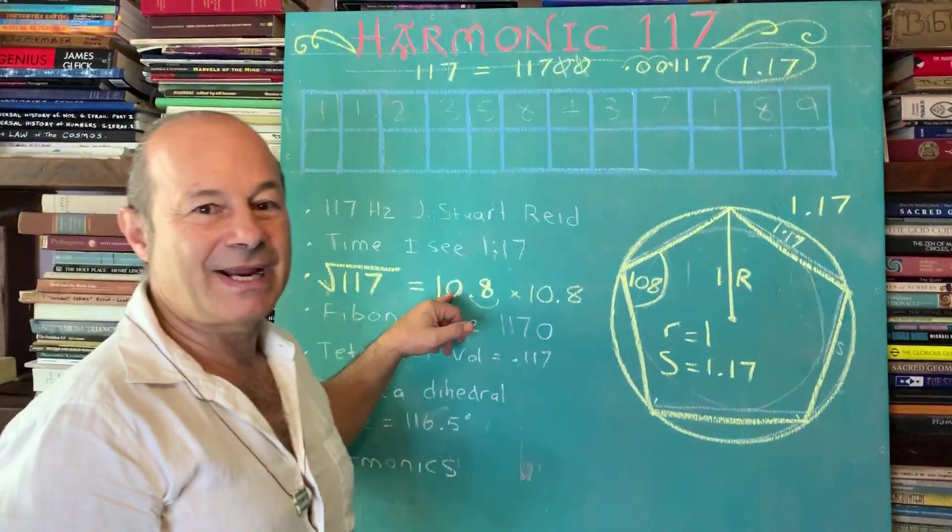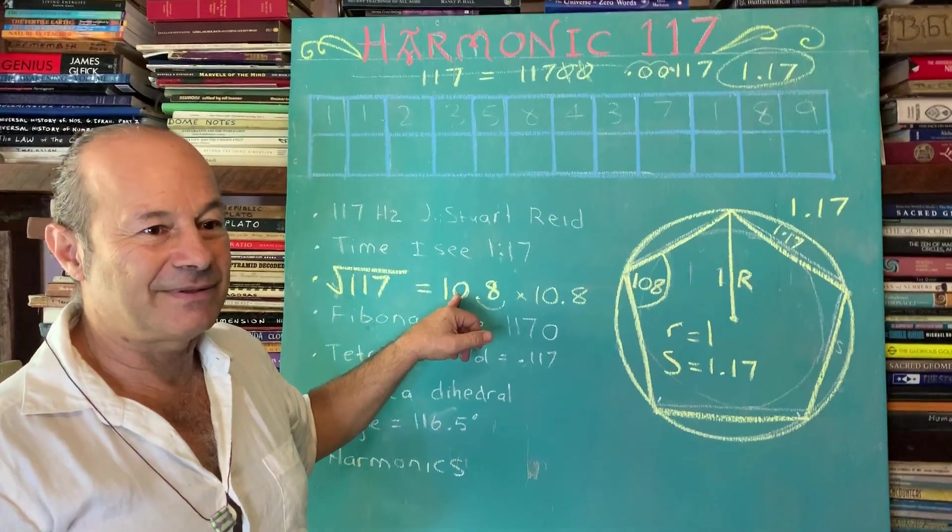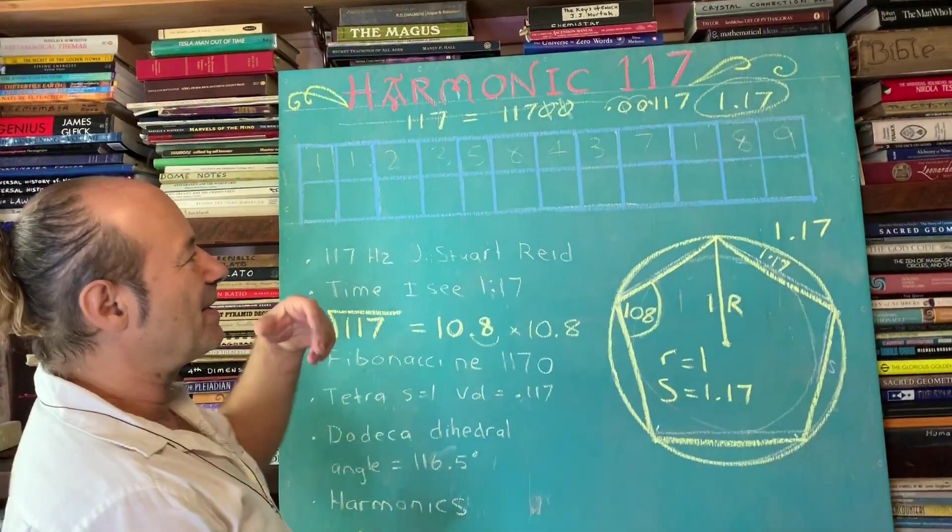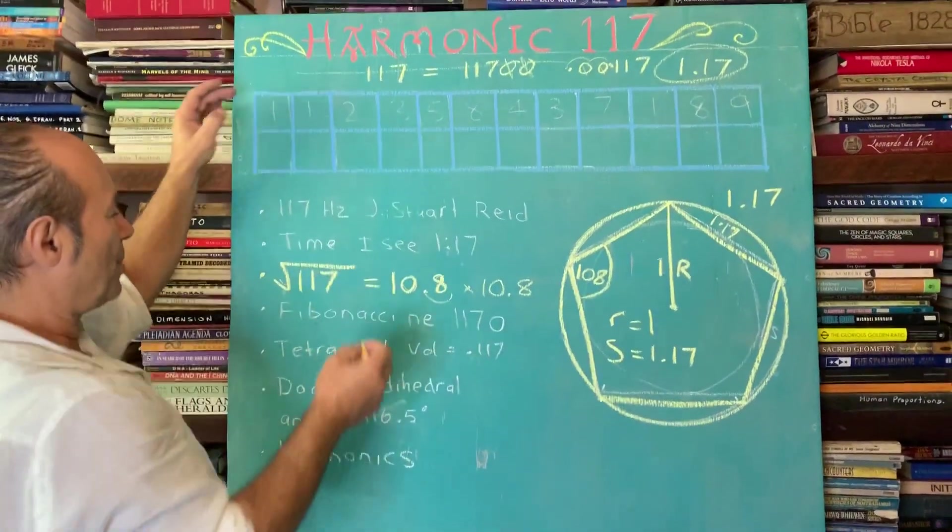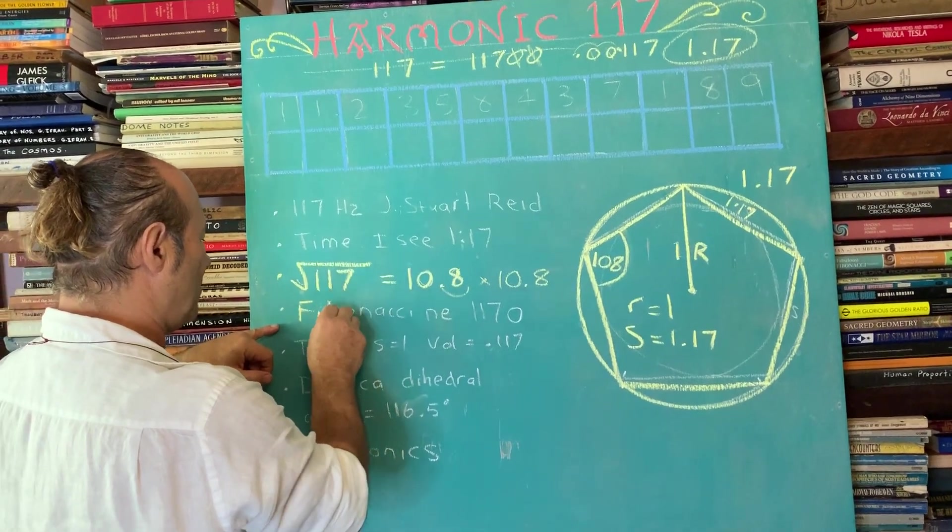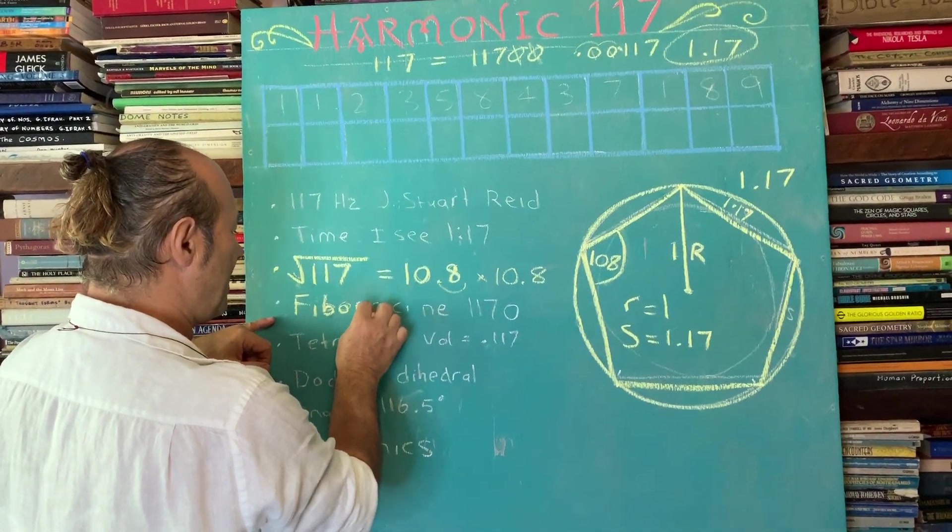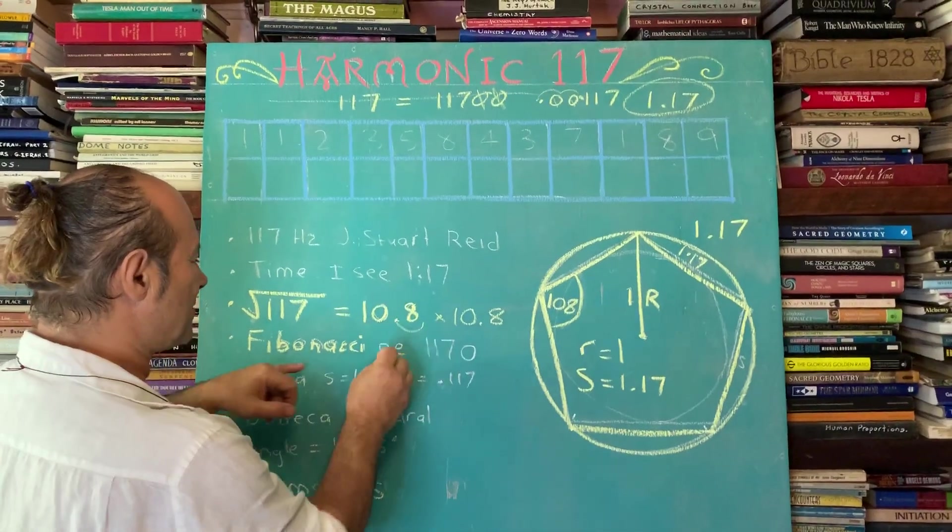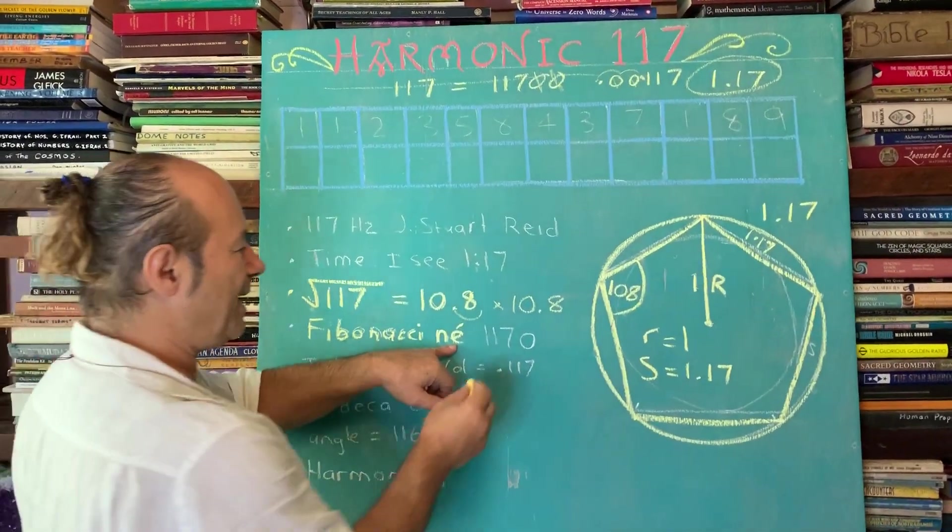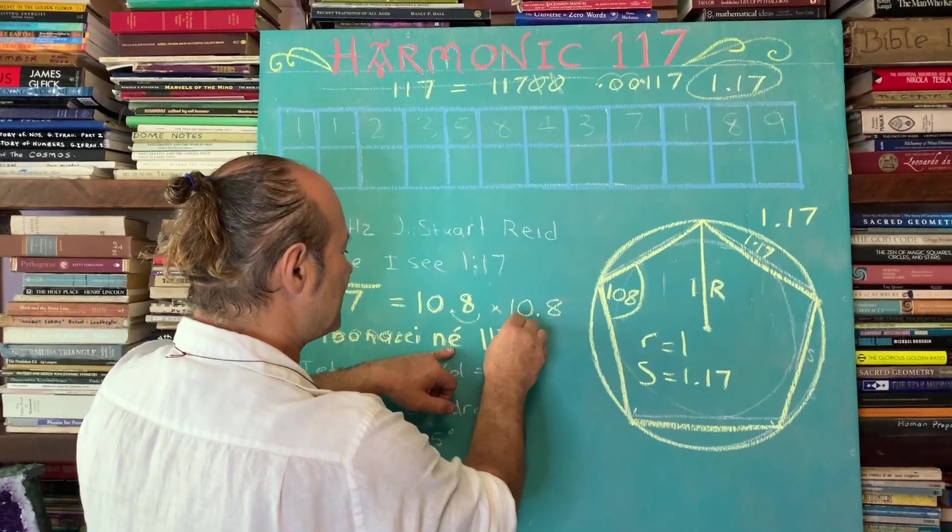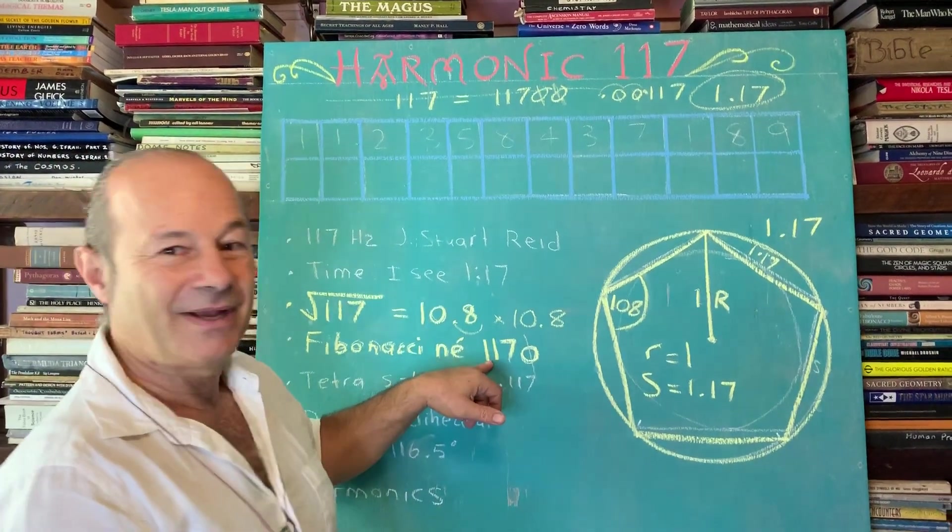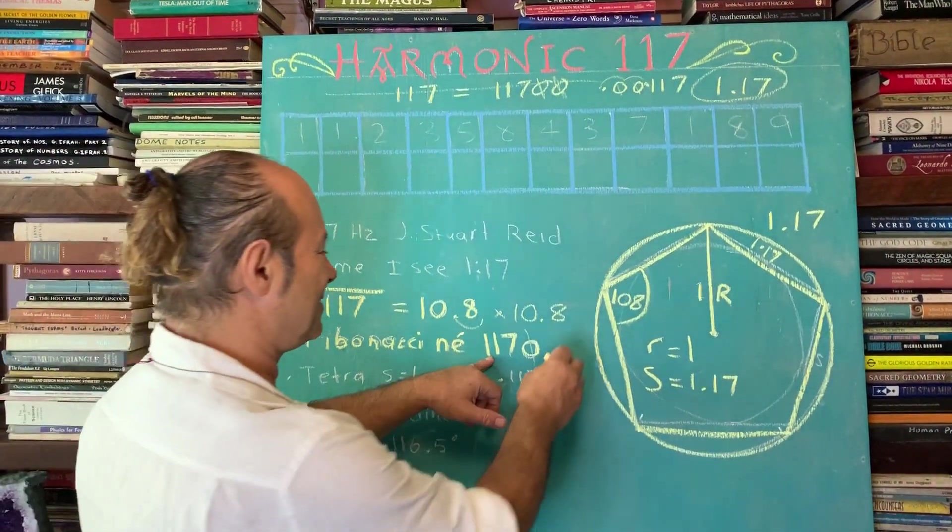While we're talking about 108, I discovered about three decades ago that inside the Fibonacci sequence, the living mathematics of nature is recorded by Fibonacci. There was someone in the 12th century called Fibonacci, and he got this from Egypt. He doesn't own this sequence, but he was born, or né in French, meaning birth, in the year 1170. So again, if you drop the zero, Fibonacci's birth date is a harmonic of 117. We've done the square root.